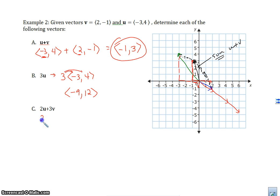2u plus 3v. So 2u plus 3v, negative 6 comma 8 plus 6 comma negative 3, and then we add them together, and we get 0 comma 5. Bam. Done, guys. Easy, right? All right, so these algebraic things with vectors are pretty simple.